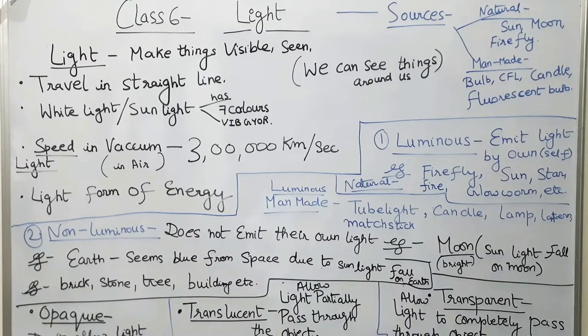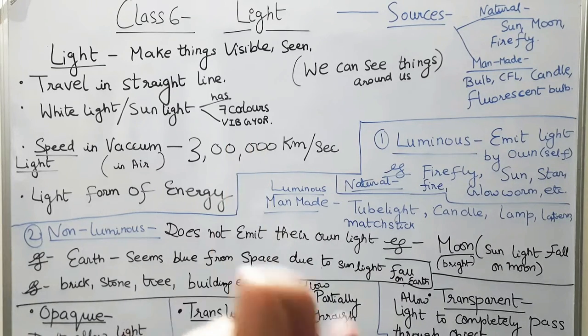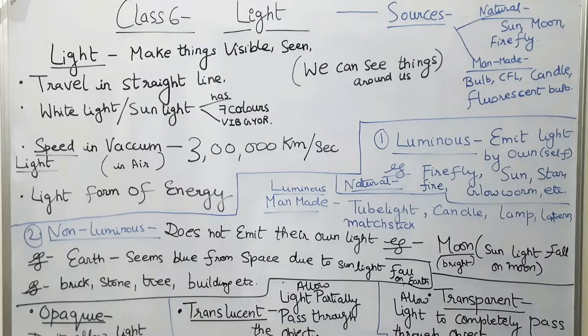White light, which is sunlight, actually has seven colors: violet, indigo, blue, green, yellow, orange, and red — which is defined as VIBGYOR.